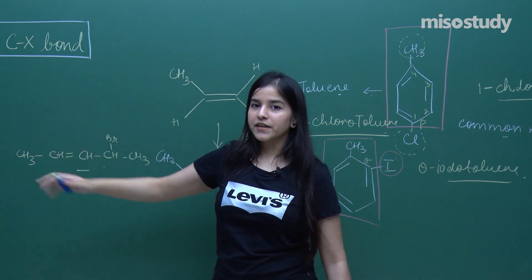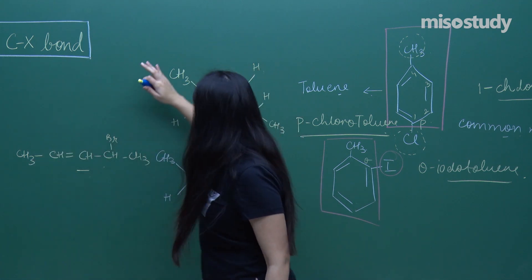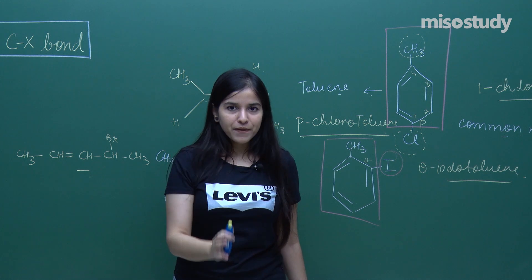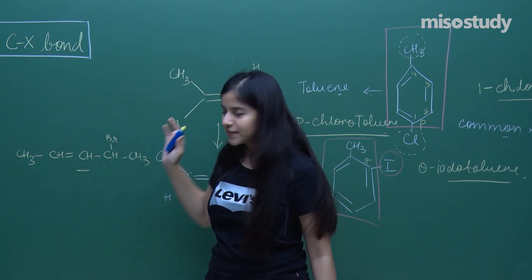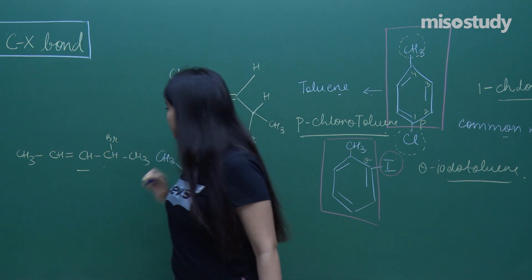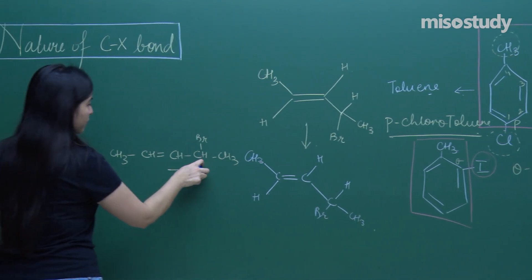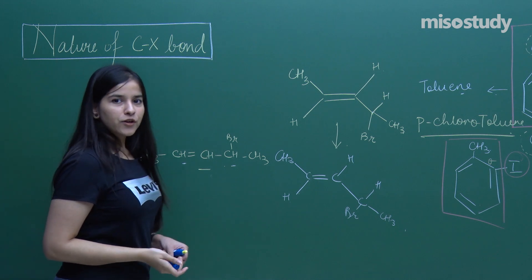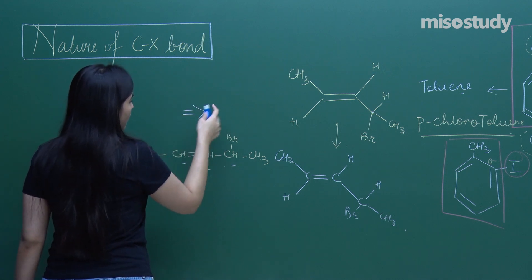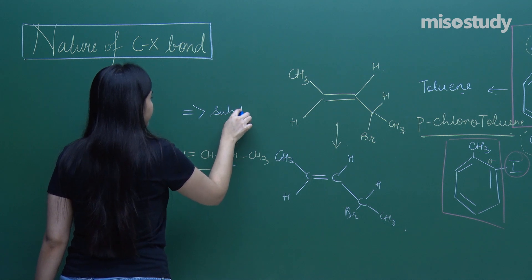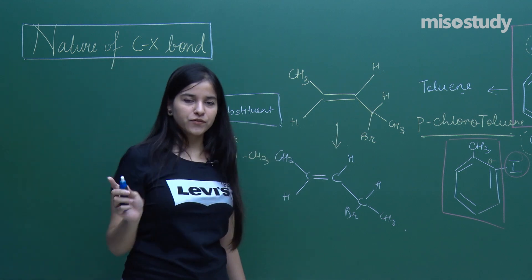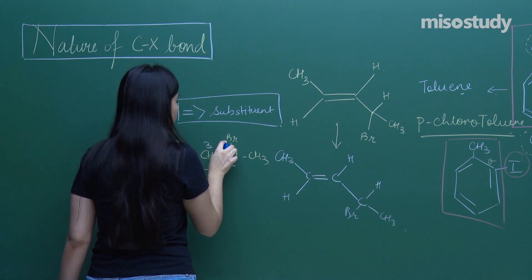What do you have to do? Again simplify it, or else you can simply number the carbons and have a proper chain. That depends entirely on your perspective. Some of you might get confused, some of you might not be. Here I have got bromine and a double bond. The preferred choice will always be the double bond whenever I have a substituent as well — choosing the double bond over the substituent. So: one, two, three, four, five.